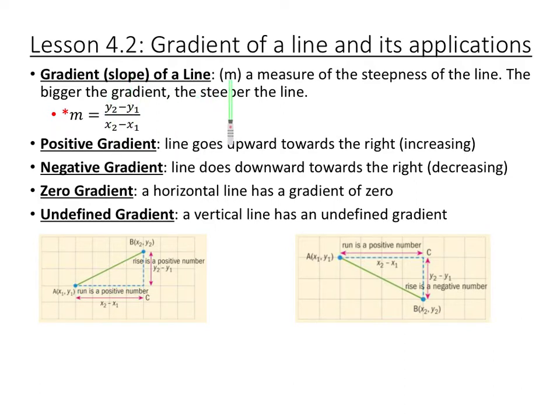Gradient is IB's word for slope. We use the letter M to represent slope or gradient, and it measures the steepness of a line. The slope formula is the change in Y, or how much you rise, over the change in X, or how much you run. So if you have two coordinates X1, Y1 and X2, Y2, then the slope between them would be Y2 minus Y1 over X2 minus X1. A positive gradient means your line is increasing, moving up towards the right. A negative gradient means it's decreasing, moving down towards the left.